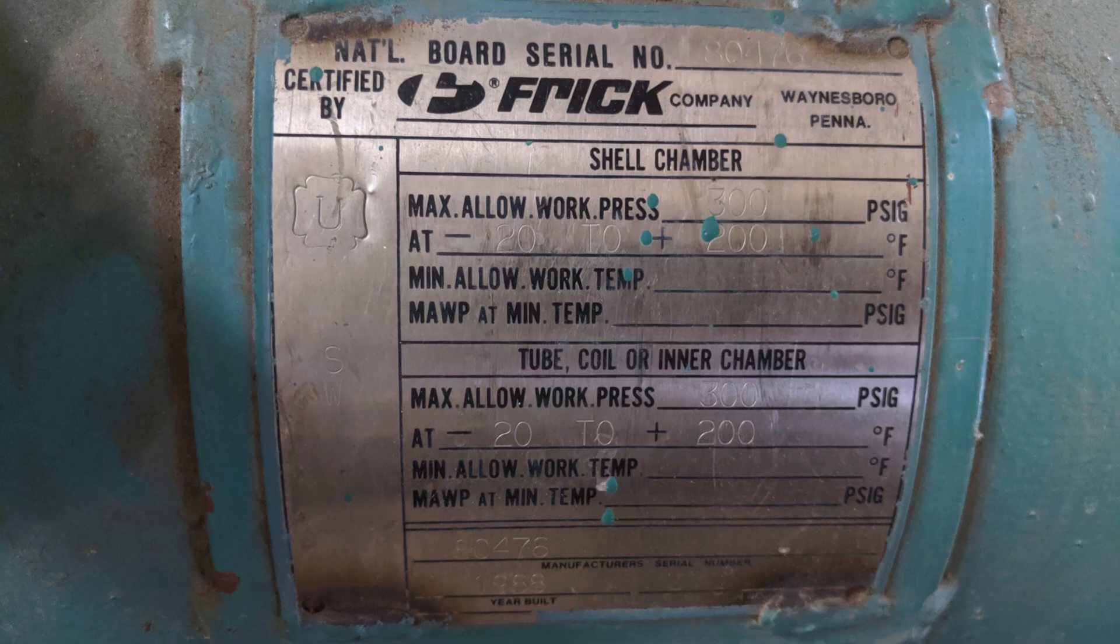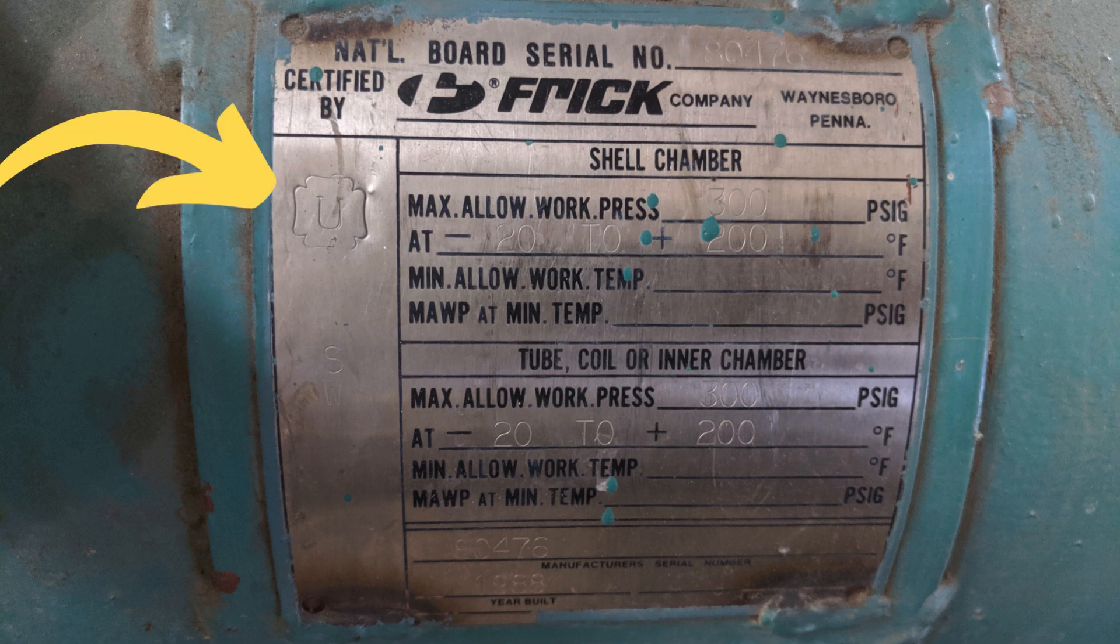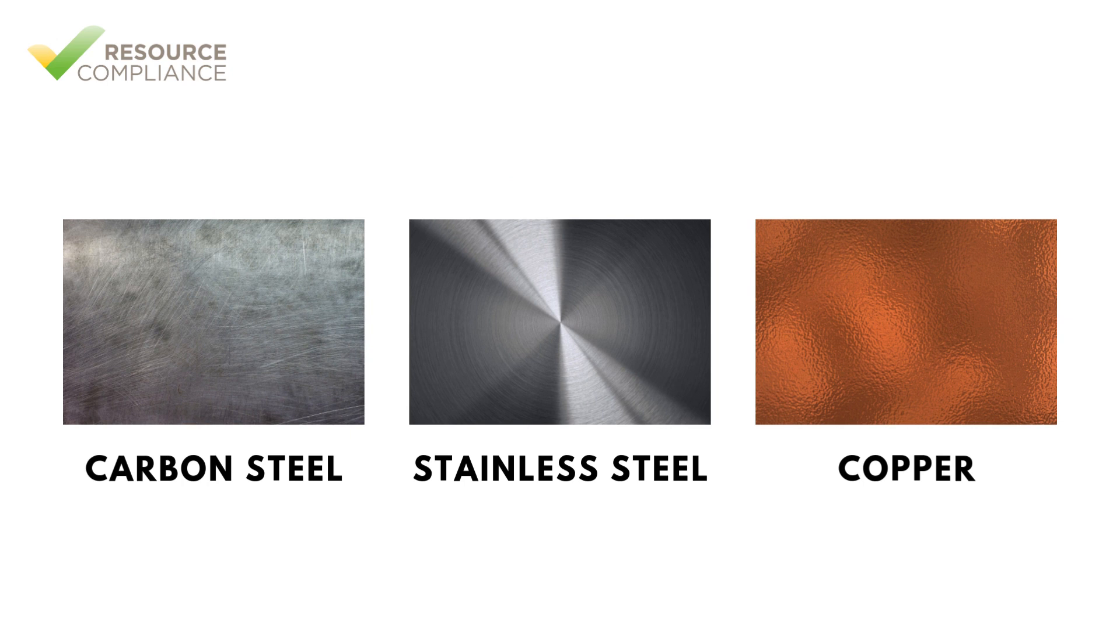Shell and tube condensers provide efficient heat transfer due to their large surface area. Furthermore, most shell and tube condensers are ASME stamped heat exchangers, making them durable for industrial applications. The tubes are typically constructed of carbon or stainless steel for ammonia systems.